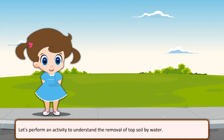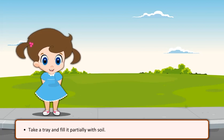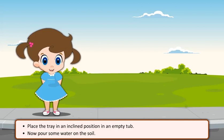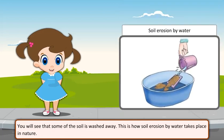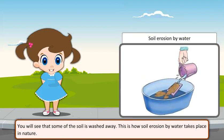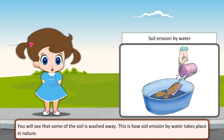To understand the removal of topsoil by water, take a tray and fill it partially with soil. Place the tray in an inclined position in an empty tub. Now pour some water on the soil. You will see that some of the soil is washed away. This is how soil erosion by water takes place in nature.